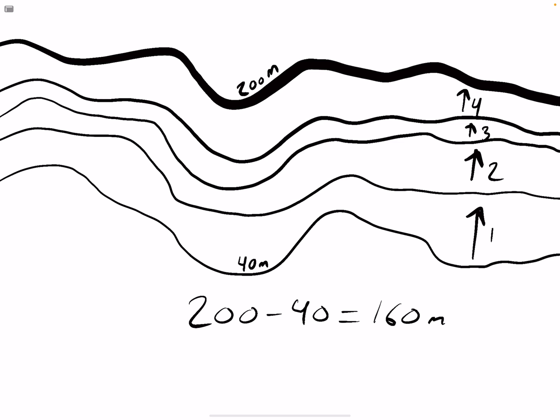So what we're going to do next is take that 160 and divide that by how many spaces there were. So there were four spaces. 160 divided by four equals 40, and that's going to be 40 meters.